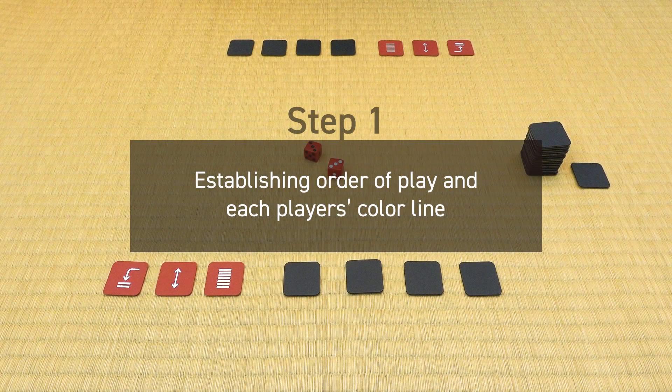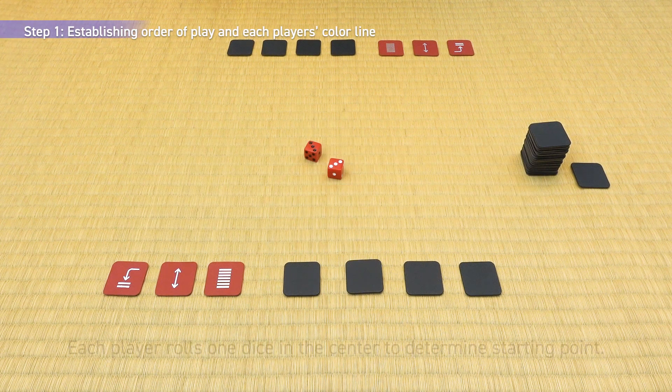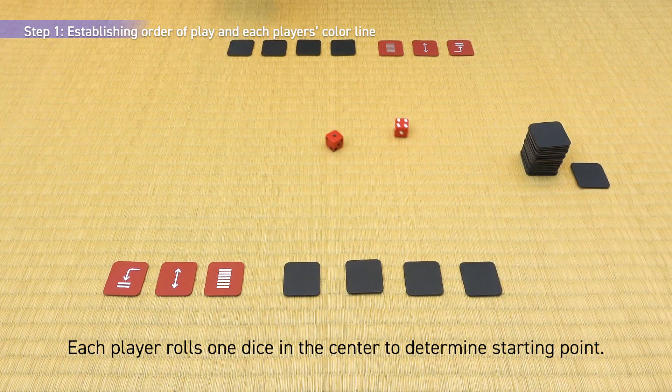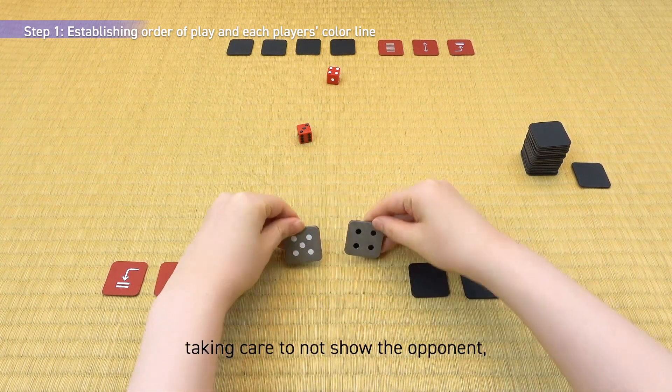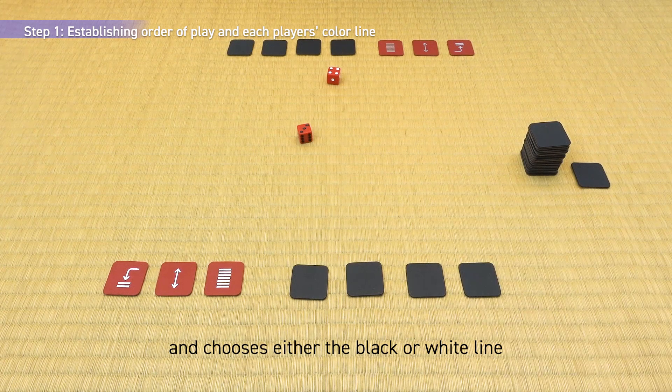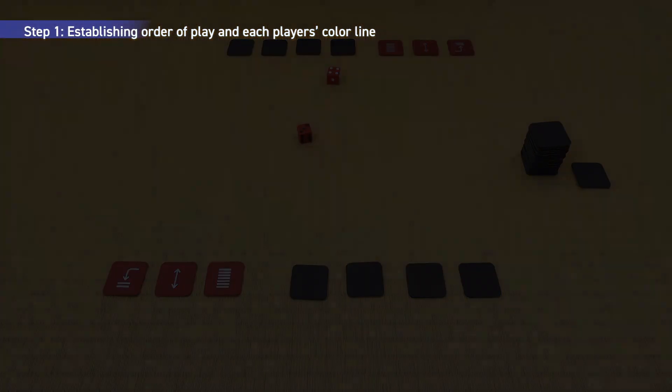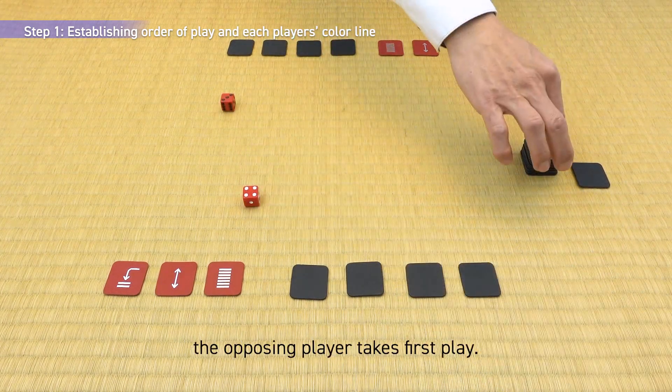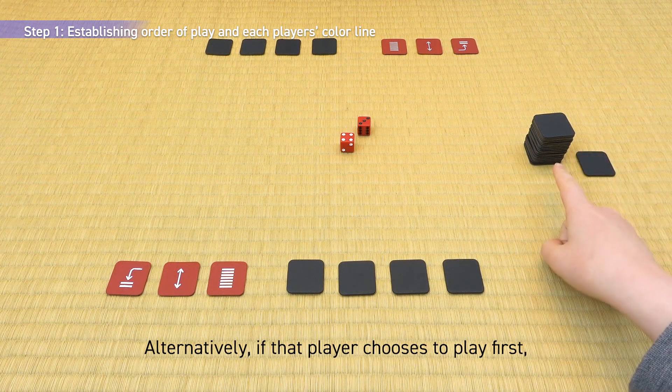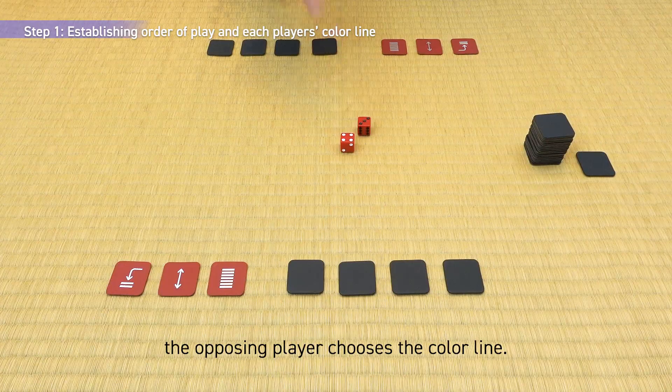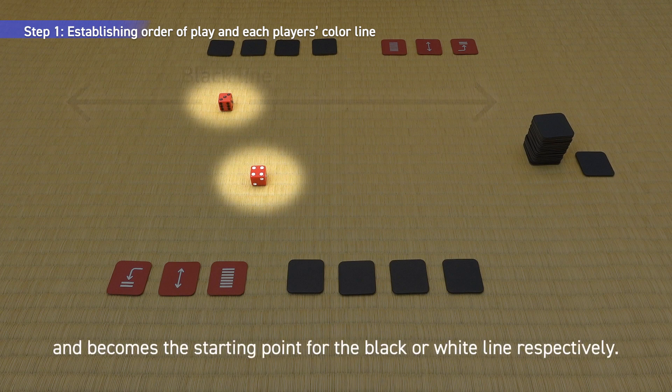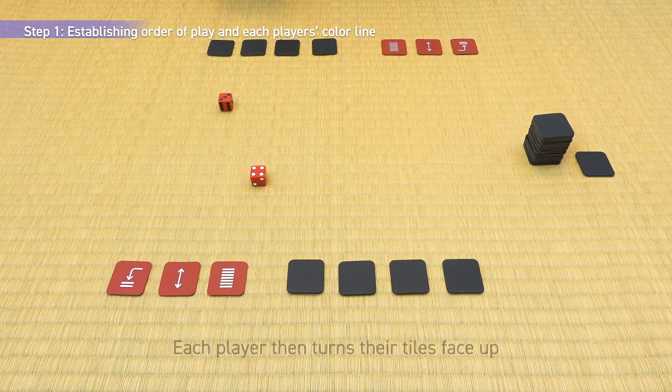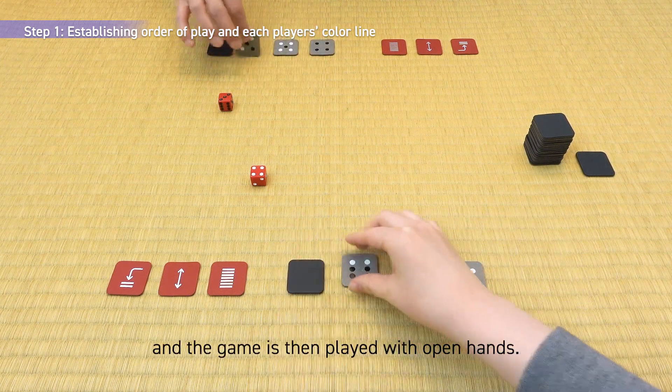Gameplay Step 1: Establishing order of play and each player's color line. Each player rolls one dice in the center to determine the starting point. If both players roll the same number, dice are rolled again. The player who rolls the highest number checks their hand, taking care to not show the opponent, and chooses either the black or white line or chooses to make the first play. If that player chooses the color line, the opposing player makes the first play. The corresponding dice color is placed in front of each player and becomes the starting point for the black or white line respectively. Each player then turns their tiles face up and the game is played with open hands.